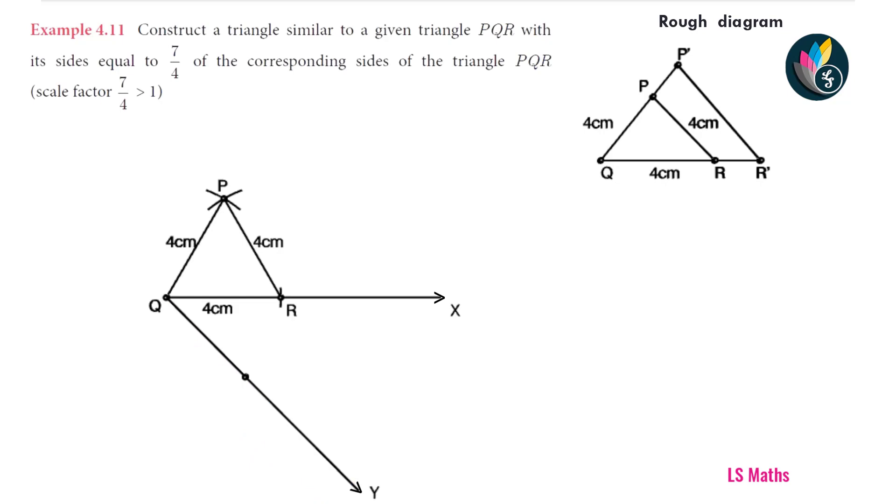Next, we are going to draw 7 arcs starting from the point Q. This is because we have 7 in the numerator of the scale factor. We may note that, for all the types of similar triangle, we draw arcs equal to the bigger number of the scale factor.